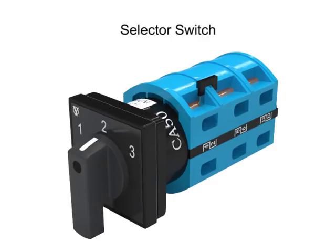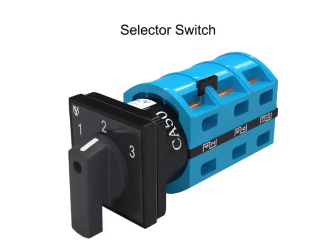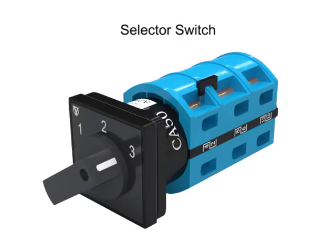A selector switch is a device with an operator that is manually rotated to activate electrical contacts. They are normally used to select either two or three different circuit conditions.